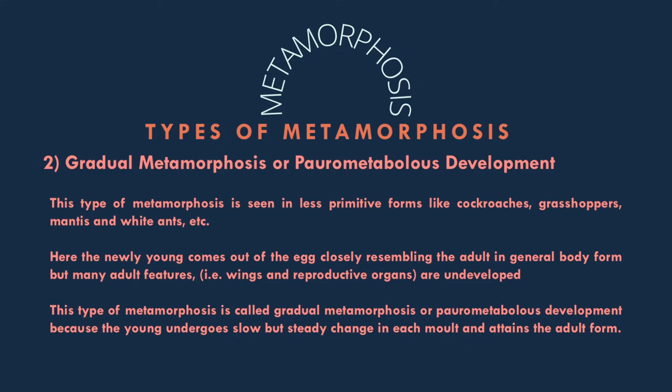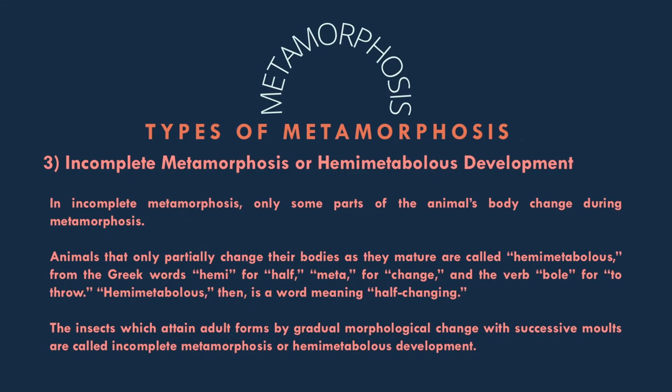Sometimes, the gradual metamorphosis or parometabolous development is included under hemi-metabolous development. In incomplete metamorphosis, only some parts of the animal's body change during metamorphosis. Animals that only partially change their bodies as they mature are called hemi-metabolous — from the Greek word hemi meaning half, meta for change, and the verb ballein meaning to throw — so hemi-metabolous means half-changing.